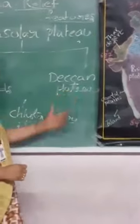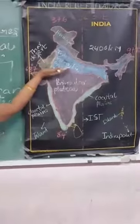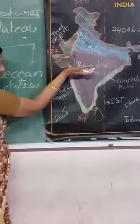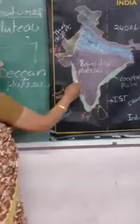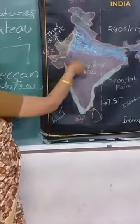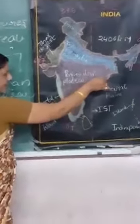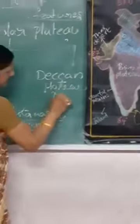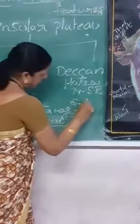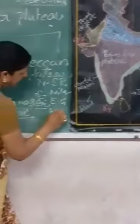The Deccan Plateau lies south of the Narmada River; its southern edge is the Nilgiris. The northernmost edge of the Deccan Plateau is the Satpura Ridge, and the eastern side has Mahadev, Maikal, and Kaimur ranges. The boundaries of the Deccan Plateau are: North — Satpura Ridge; South — Nilgiris; East — Eastern Ghats; West — Western Ghats.